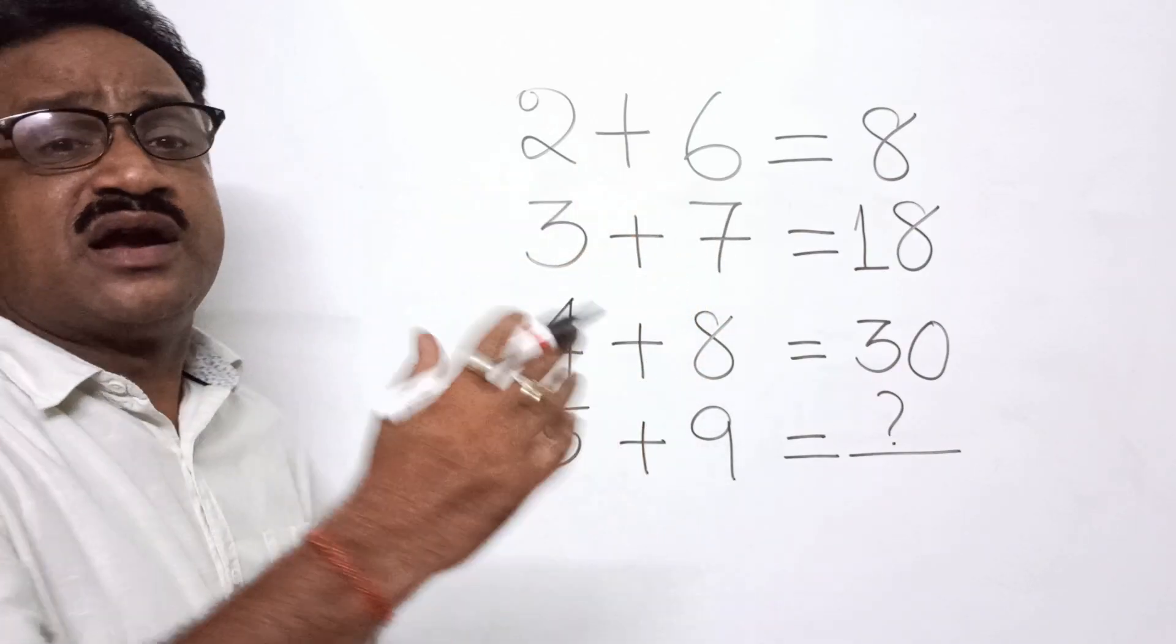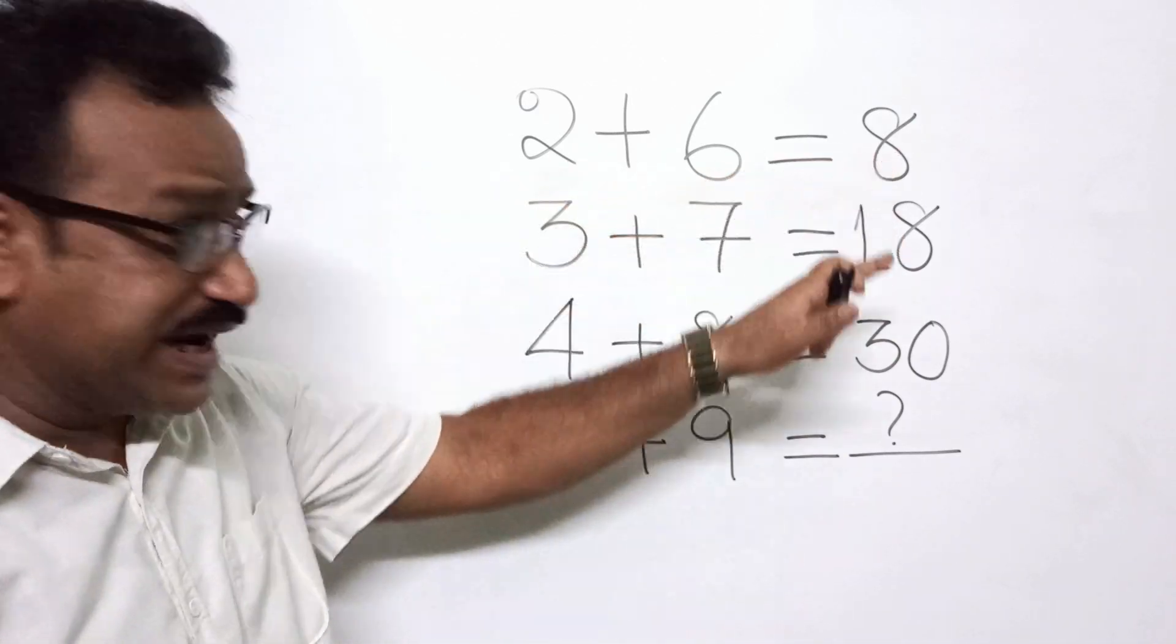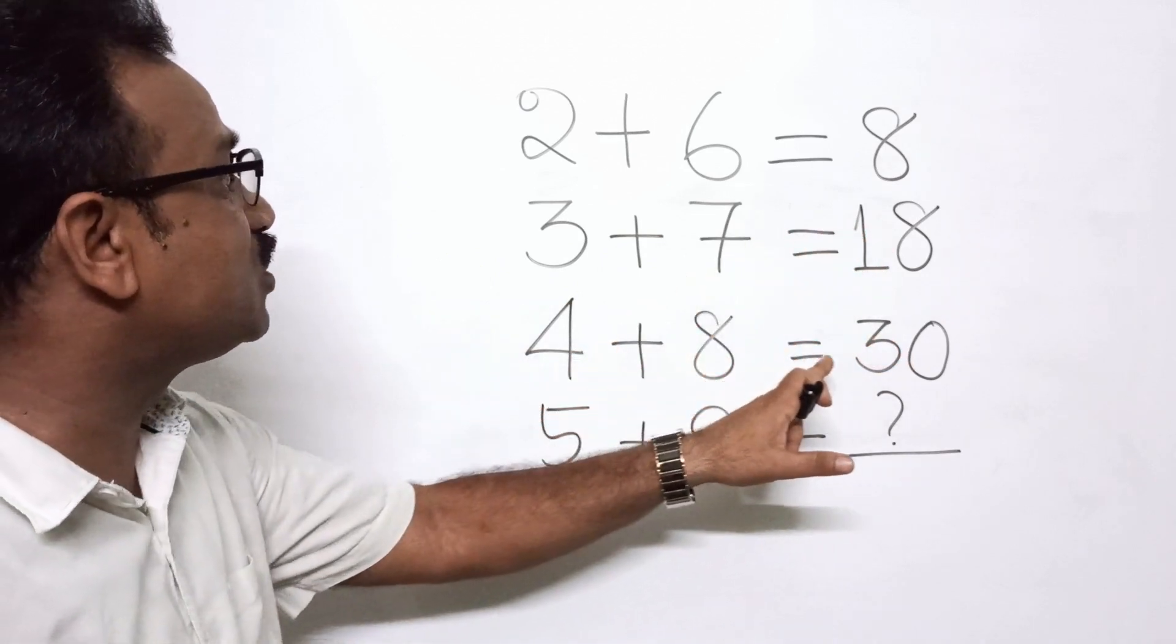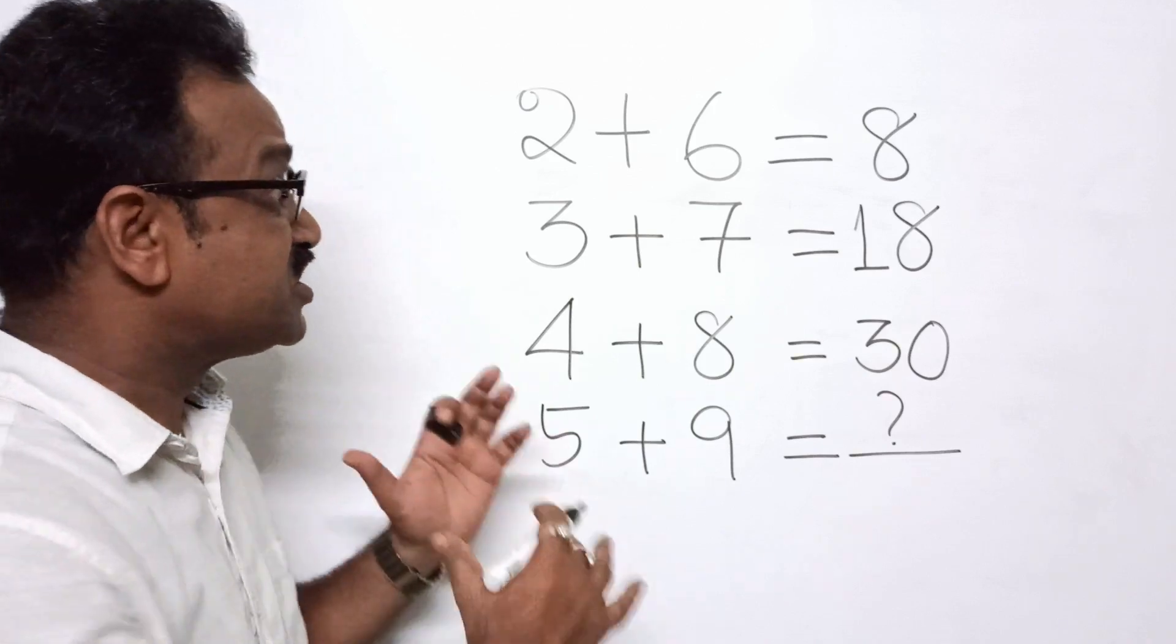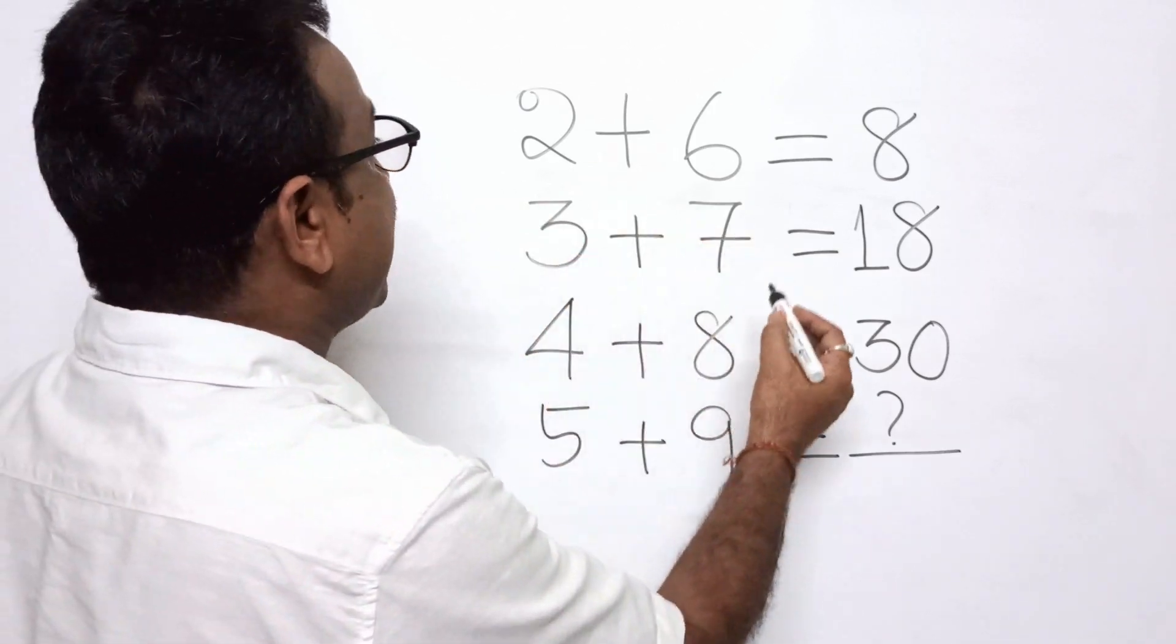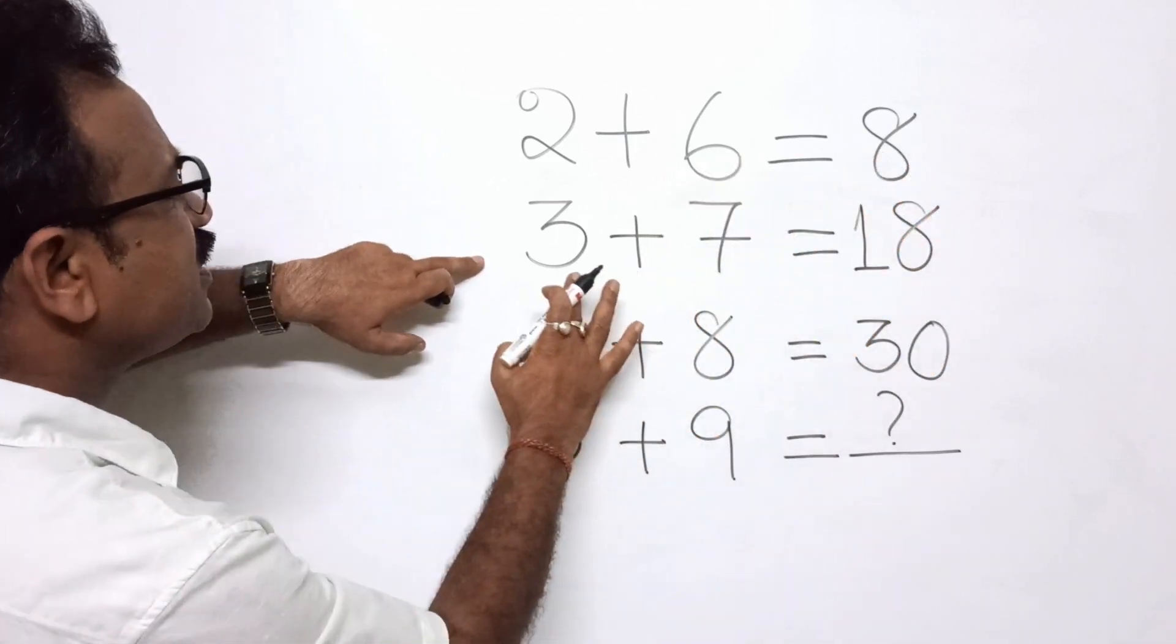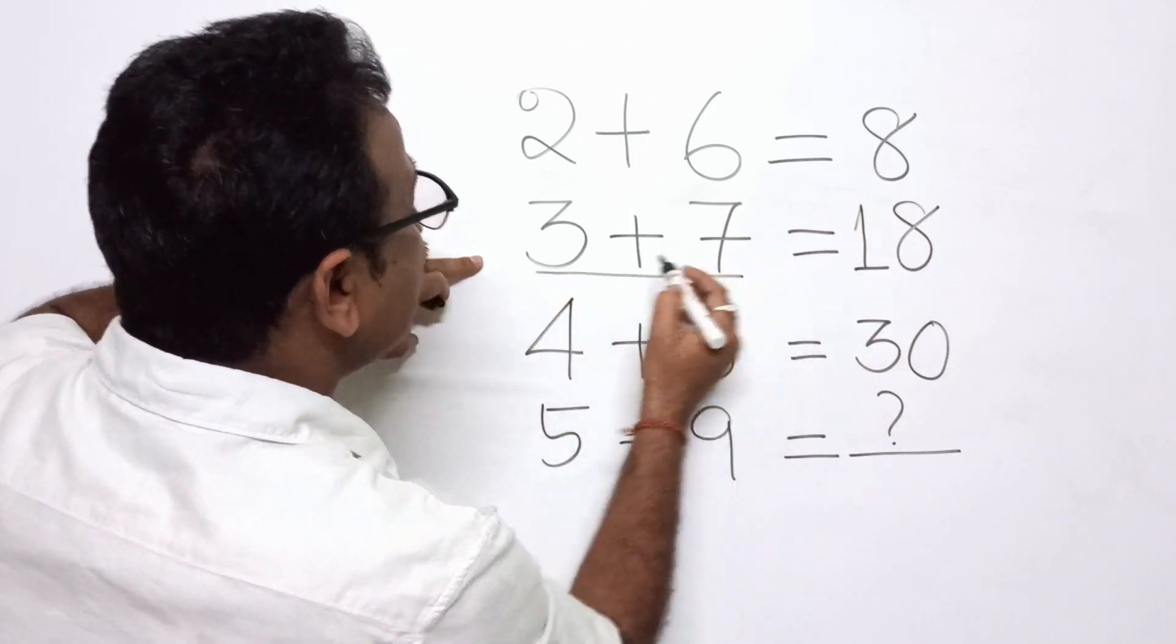The exact question was displayed on the screen. So now see, 2 plus 6 is equal to 8, 3 plus 7 is equal to 18, 4 plus 8 is equal to 30. Then 5 plus 9 is equal to what? Let us see what is the pattern. So pattern, 3 plus 7 is 18, 2 plus 6 is 8. 3 plus 7 is 18. How are we getting 18? 3 plus 7 is 10.